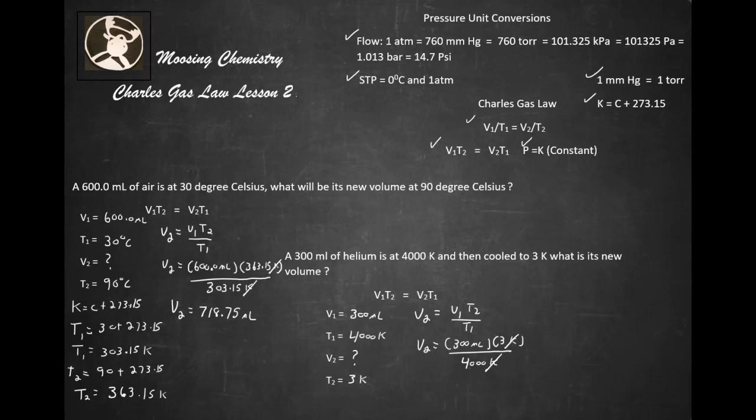Kelvins cancel out, so our new volume is going to be significantly smaller. It's going to be 300 times 3 divided by 4000, which equals 0.225 milliliters.